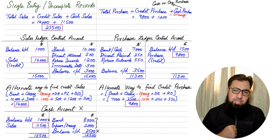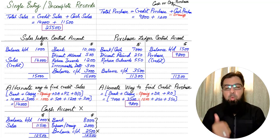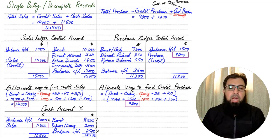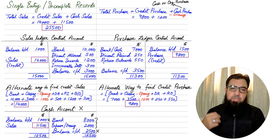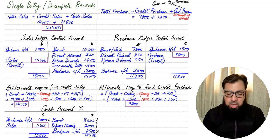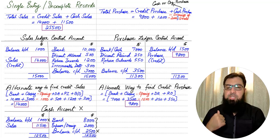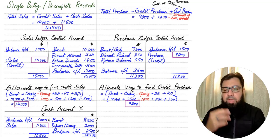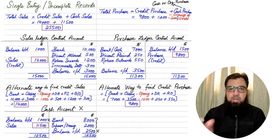We also have drawings of goods — whenever we take out goods from the business for our own personal use, for example taking an iPhone 12 Pro Max from a gadget shop for personal use, the entry is: Drawings is debited and Purchase Account is credited. This drawing of goods must be deducted from total purchase to calculate net purchase. Importantly, drawings are recorded at cost price, not selling price — we cannot charge profit to ourselves.